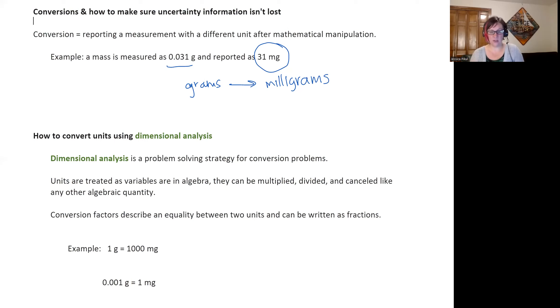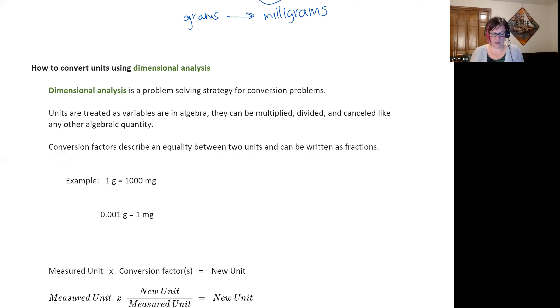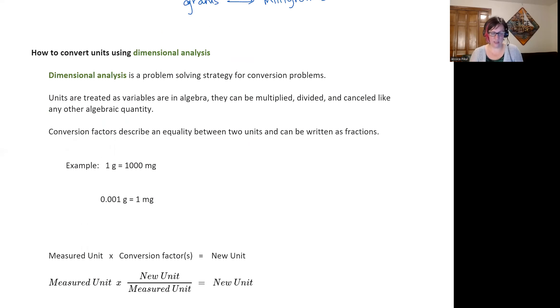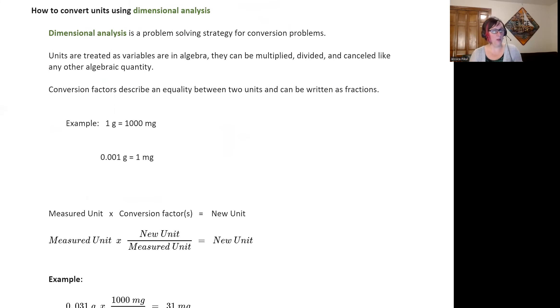And so conversion factors then are going to really be used to manipulate or use to change a number from one unit to another. And we'll use dimensional analysis and units to kind of set up how that calculation should look. So conversion factors basically are going to just be descriptions of equalities. And so let's walk through kind of an example, continuing this idea of 0.031 grams is equal to 31 grams.